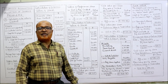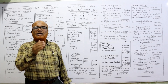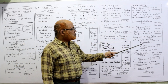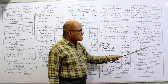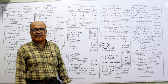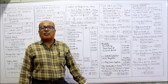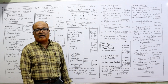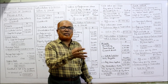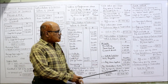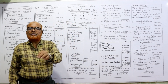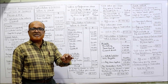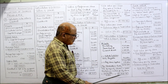Expected rate of return = (profit available for equity shareholders ÷ equity share capital) × 100 = (₹5,28,000 ÷ ₹6,00,000) × 100 = 88%. Yield value per equity share = (expected rate of return ÷ normal rate of return) × paid-up value per share = (88 ÷ 15) × 100 = ₹586.67.